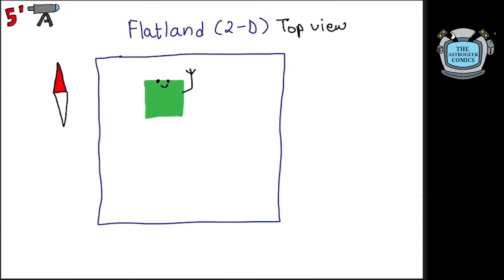In Flatland, you can only go forwards or backwards, that is, north and south, or sideways, east and west. Up or down have no meaning and are absurd in this place.